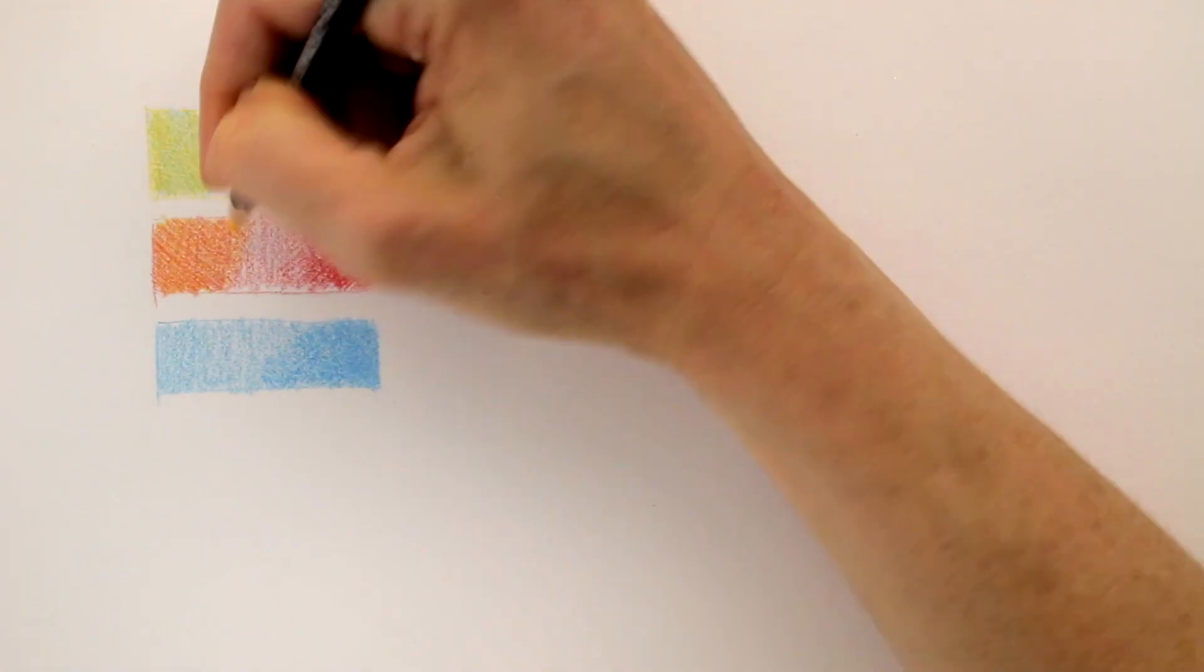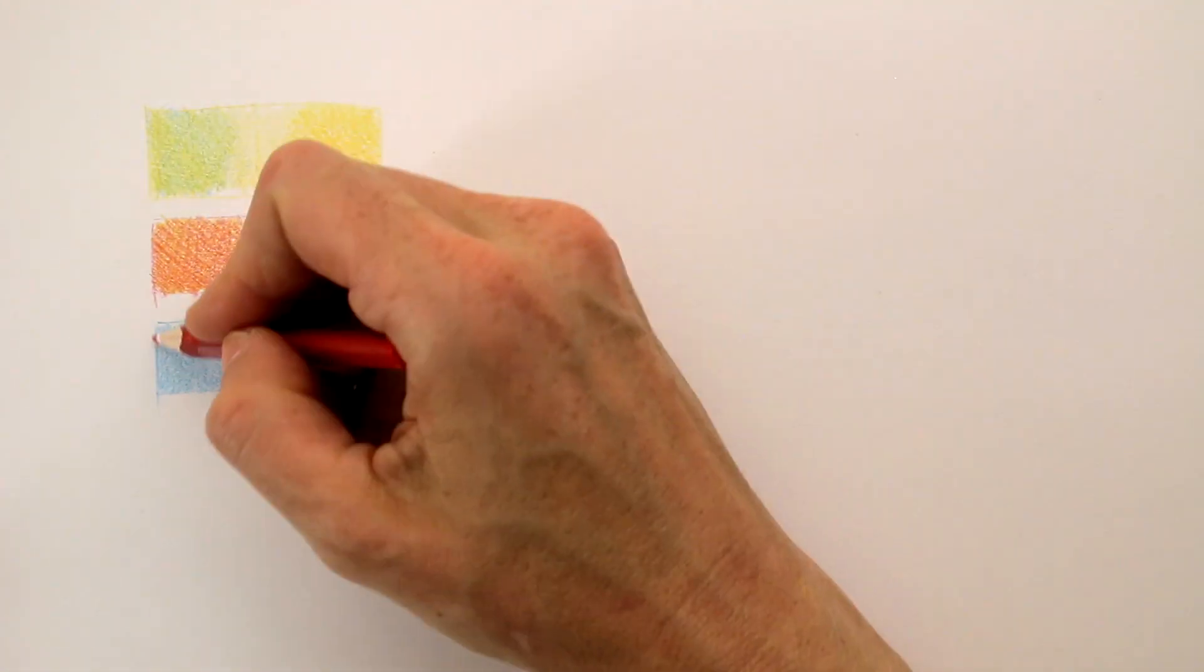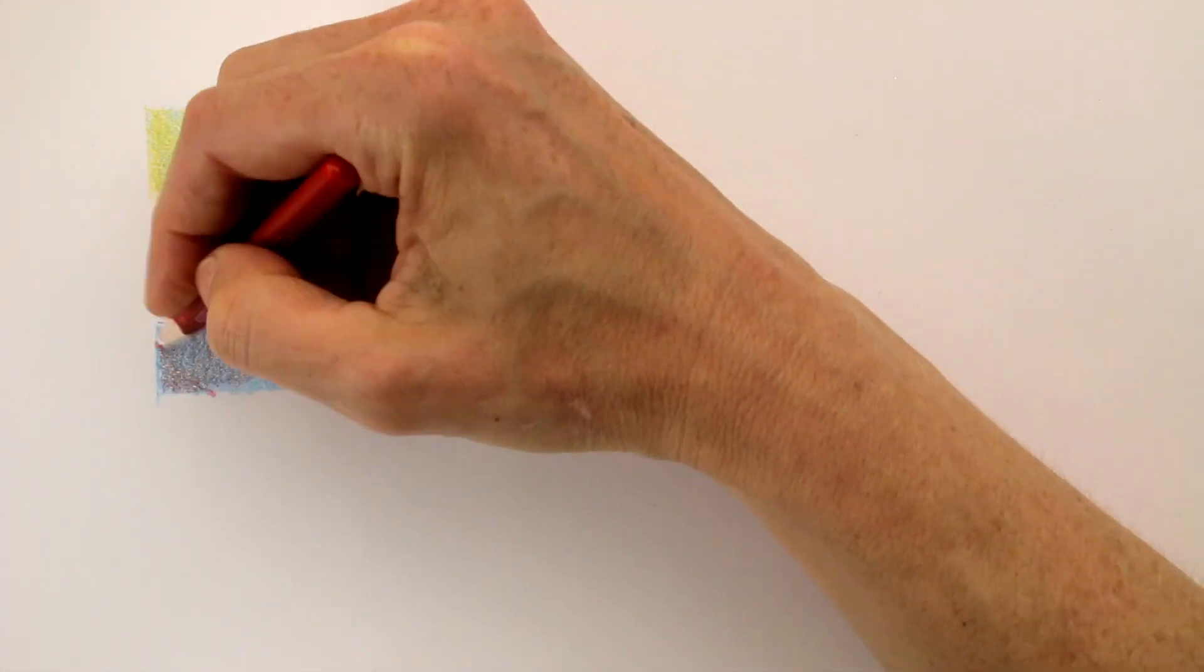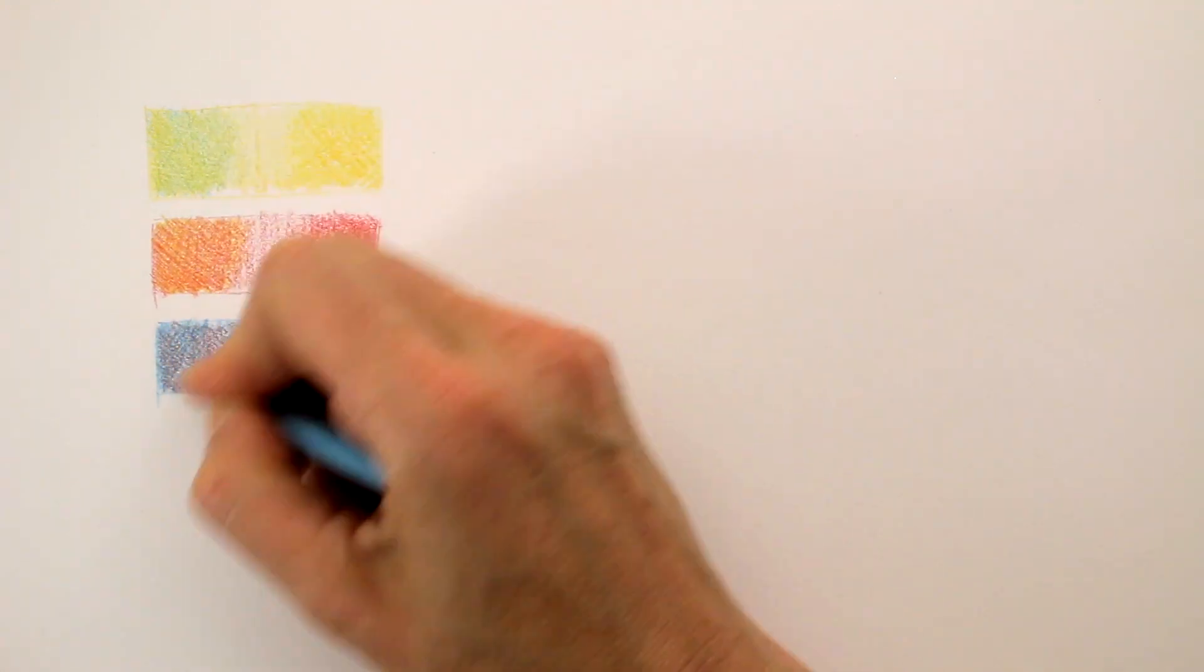Yellow, red, and blue are the primary colors, and really, they are all you basically need. When adding blue to yellow, you get green. When adding yellow to red, you get orange. And when adding red to blue, you get purple.